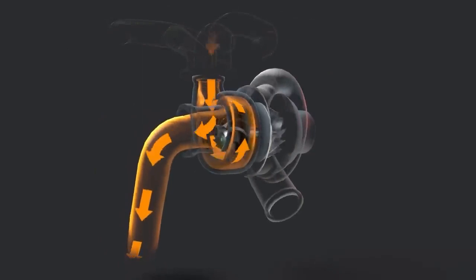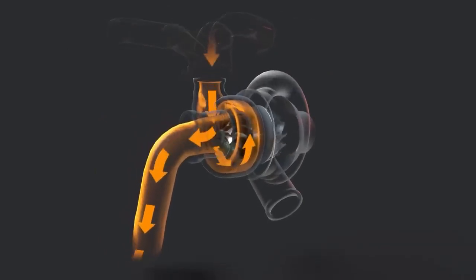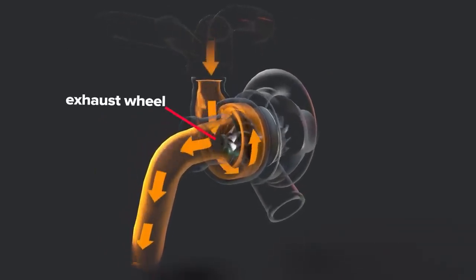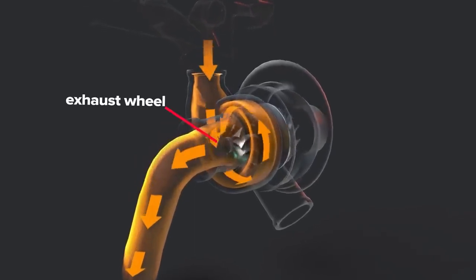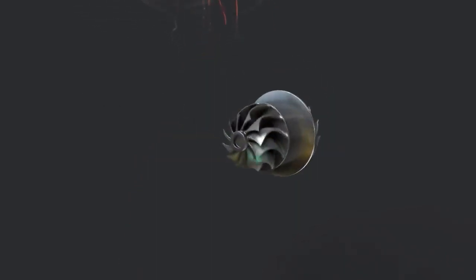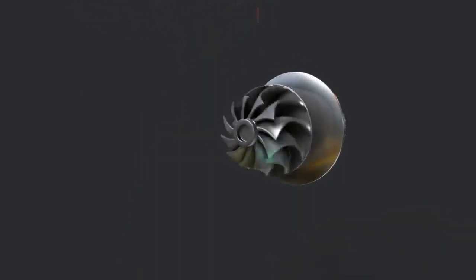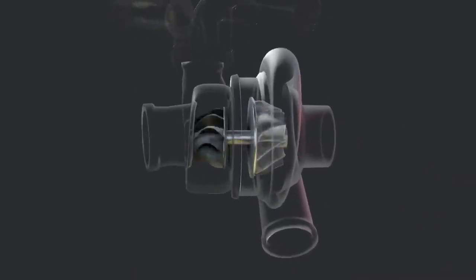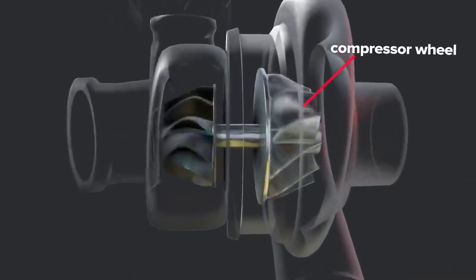Exhaust flows through the turbine section as exhaust heat and pressure drive the turbine or exhaust wheel. A sealed shaft connects the exhaust wheel to the compressor wheel.